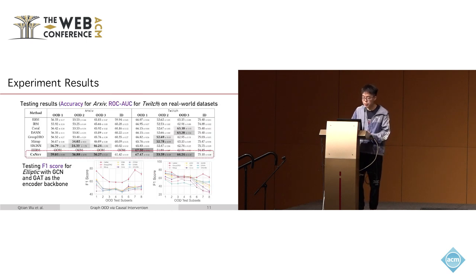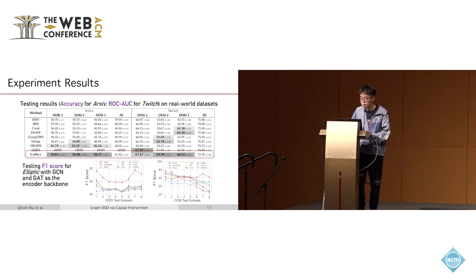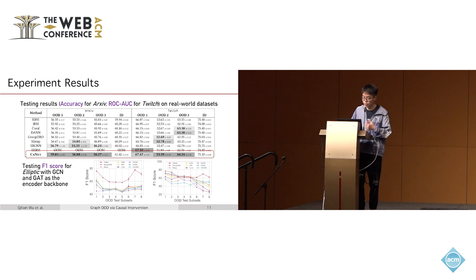The arXiv dataset is a temporal graph containing paper publication times. The Twitch dataset is a social network with multiple disconnected subgraphs. Comparing against strong baselines for OOD generalization in both general machine learning and graph-structured data, our model achieves improvements over the state-of-the-art. Results are also shown using GCN and GAT backbones on the Elliptic financial dataset, split by graph snapshots across different time windows.